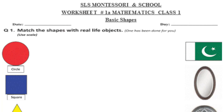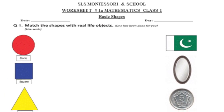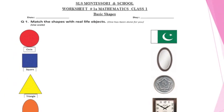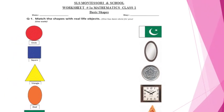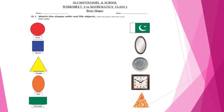Now let's do Worksheet 1A on basic shapes. First, write the date and day. Let's read question number one: match the shapes with real life objects. On the left side of the page, shapes are given — circle, square, triangle, oval, and rectangle.